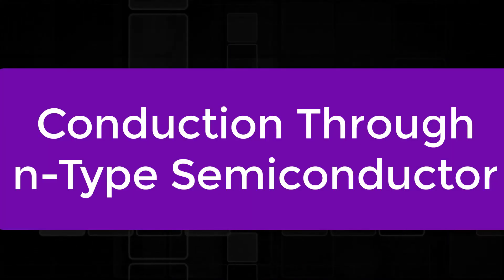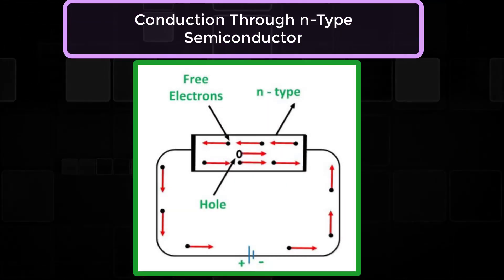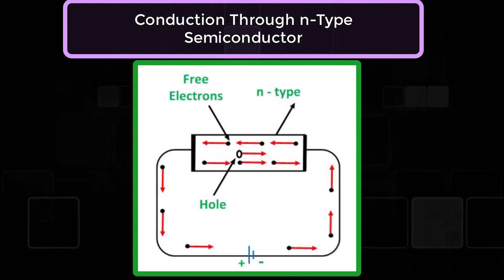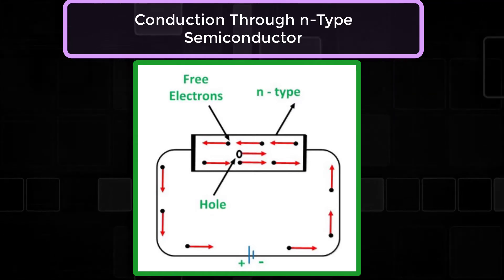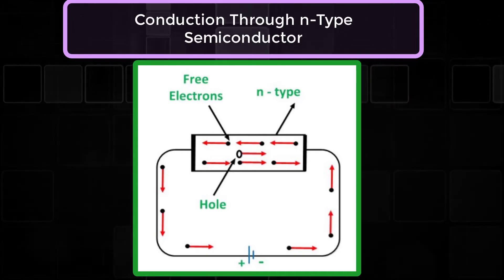Now, let's look into conduction through n-type semiconductor. In the n-type semiconductor, a large number of free electrons are available in the conduction band, which are donated by the impurity atoms. The figure shows the conduction process of an n-type semiconductor.